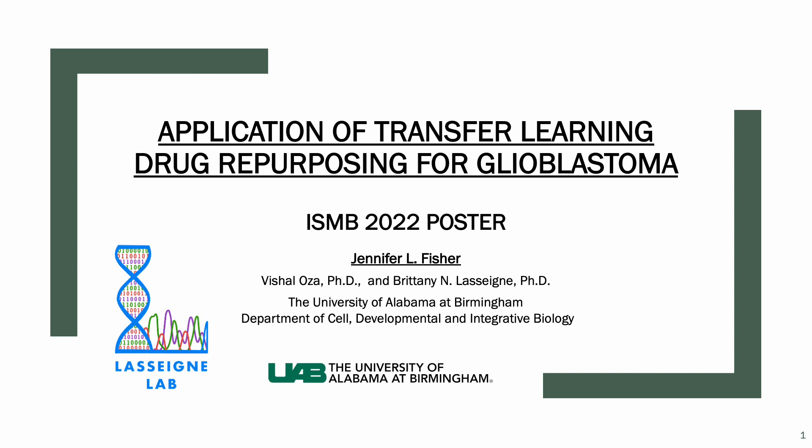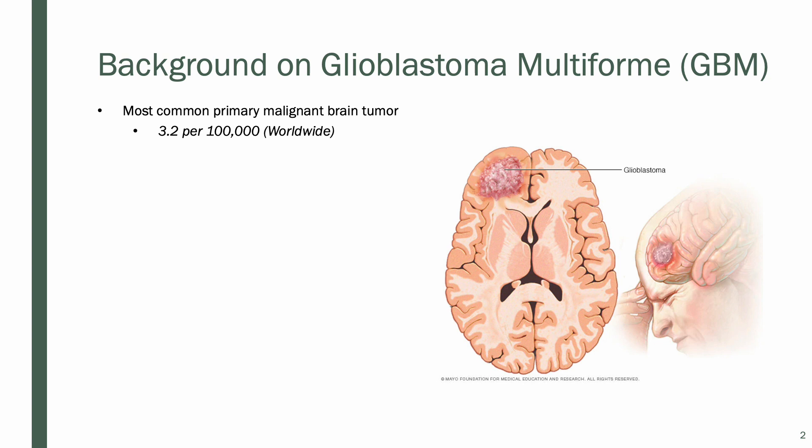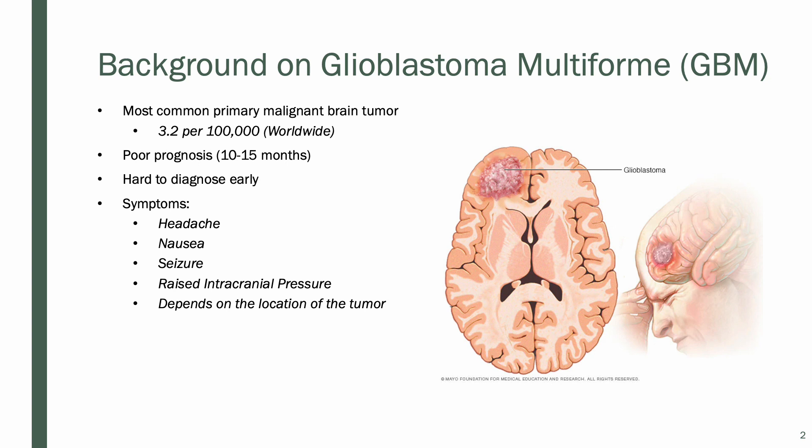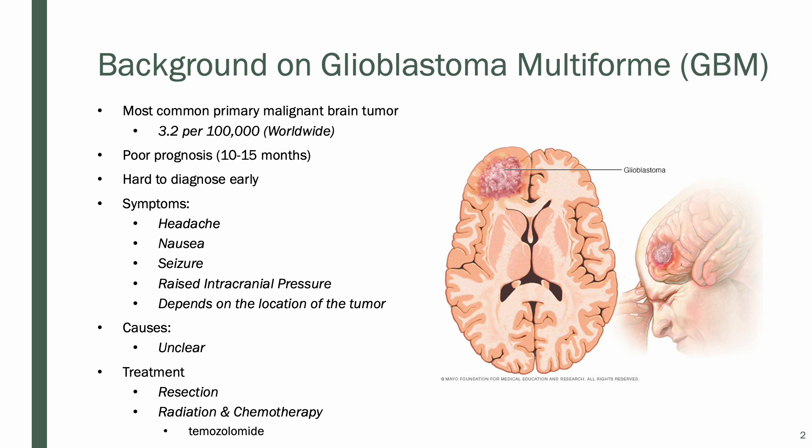Glioblastoma is a rare brain tumor. It's the most common primary malignant brain tumor, has a poor prognosis of 10 to 15 months, and is hard to diagnose early. Symptoms include headache, nausea, seizures, and raised intracranial pressure, but really depend on the location of the tumor. The causes of this disease are unclear, but the current treatment is resection of the tumor, radiation, and chemotherapy, which works in about 50% of patients, really indicating that there is a need for new therapies for this disease.